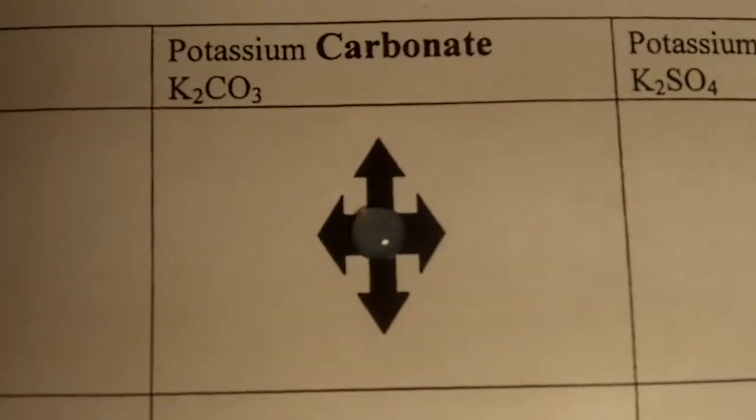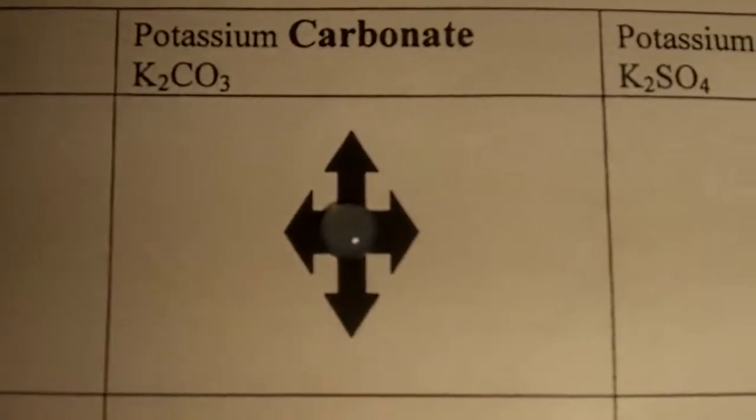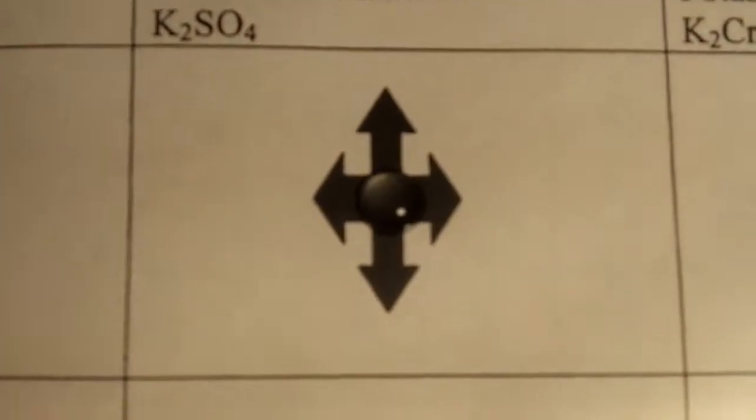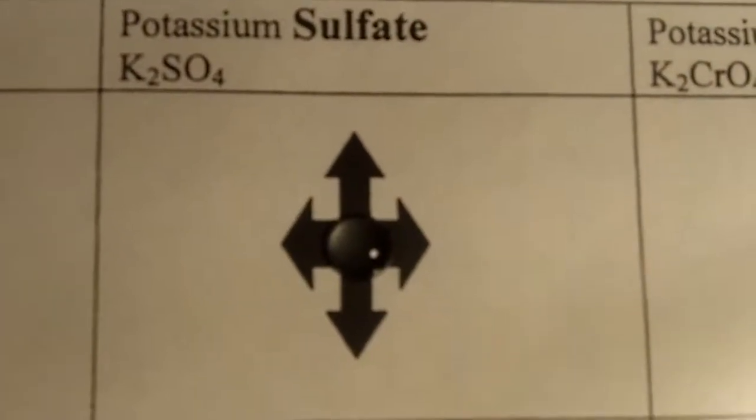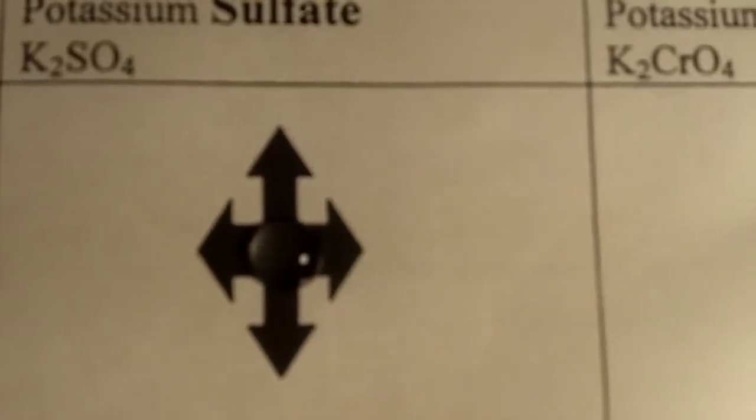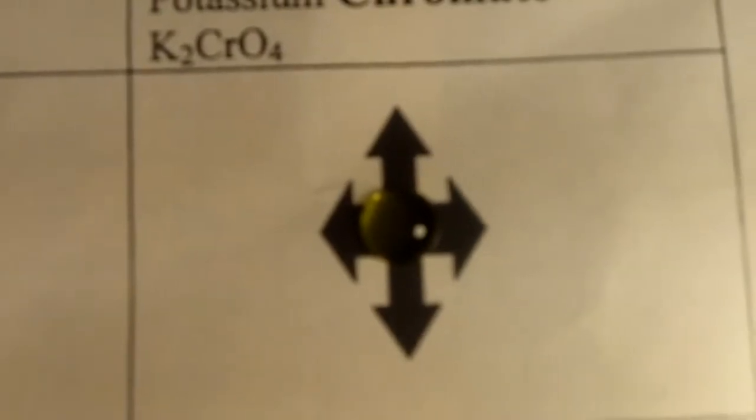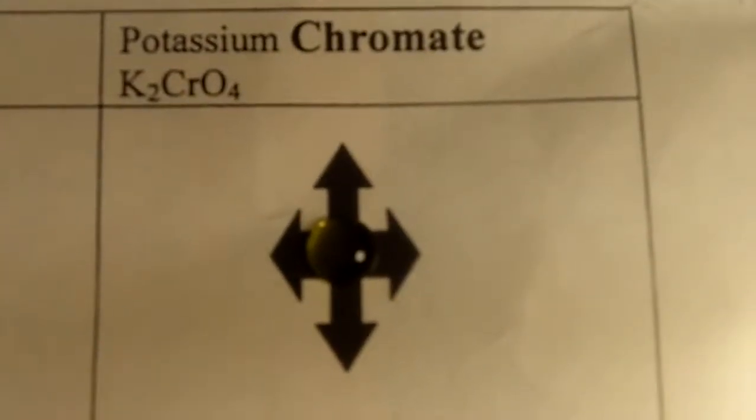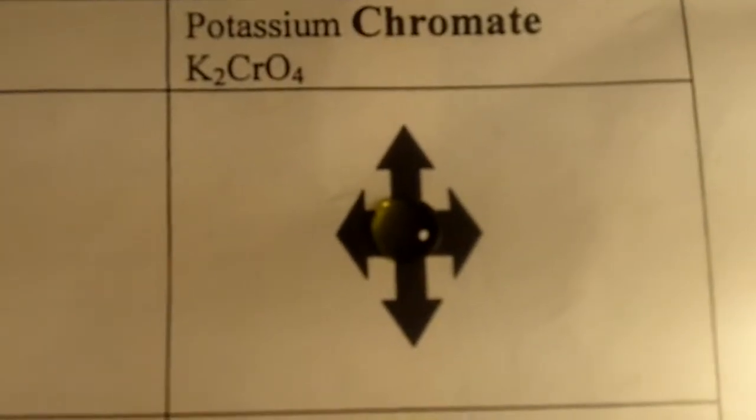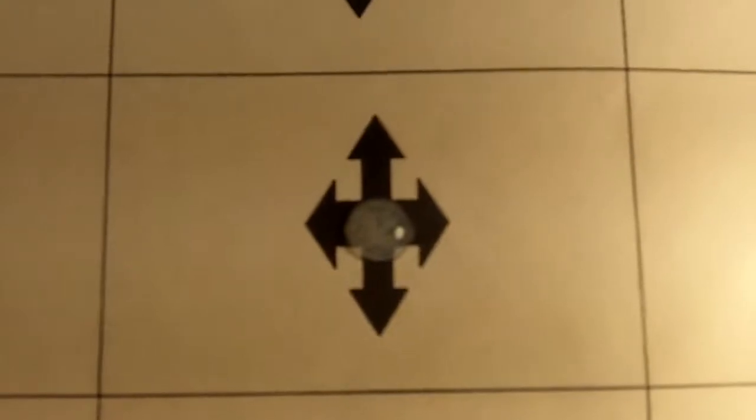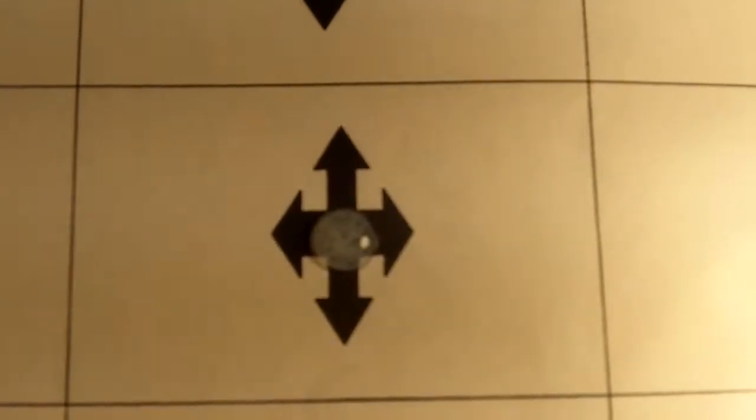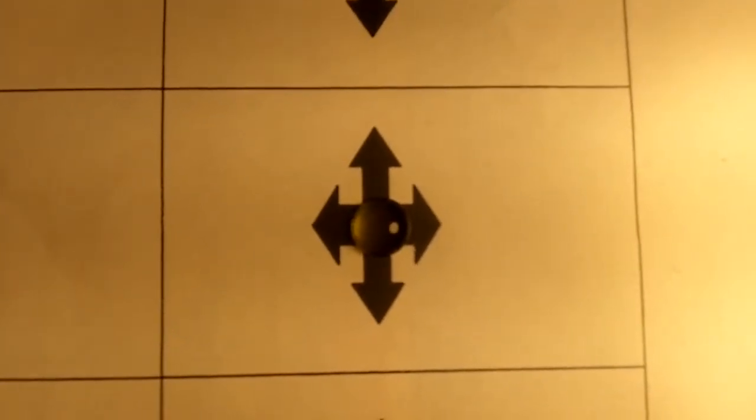So this first row that you're looking at, this is the magnesium nitrate and the potassium carbonate. This is the magnesium nitrate and the potassium sulfate. And the last one is the magnesium nitrate and the potassium chromate. Okay, now we're going to move down to calcium nitrate. And the first one that you're looking at, this is the potassium carbonate and the calcium nitrate. This is the potassium sulfate calcium nitrate reaction. And the last one is the potassium chromate calcium nitrate reaction.